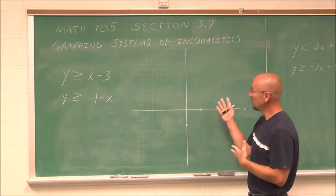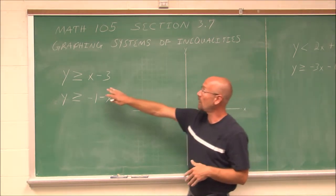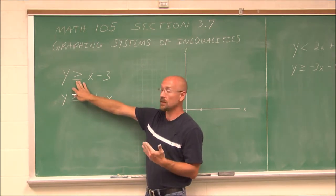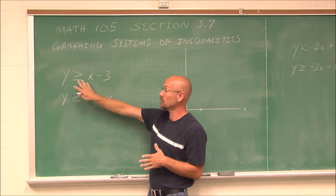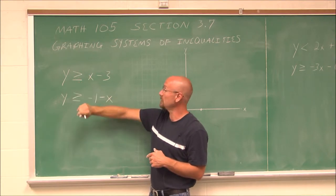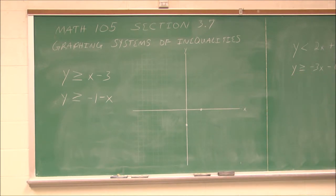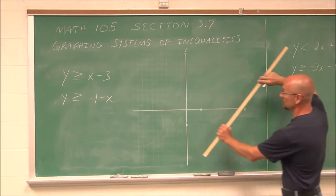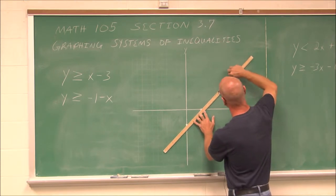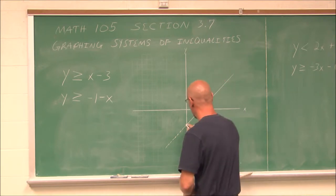In order to graph it, the first thing I have to determine is what kind of line. If we recall, we look at the inequality. If it's equal to, it's a solid line. If it's just a less than or greater than and not equal to, then we'd use a dashed line. I see that it's an equal to, so I'm going to use a solid line.